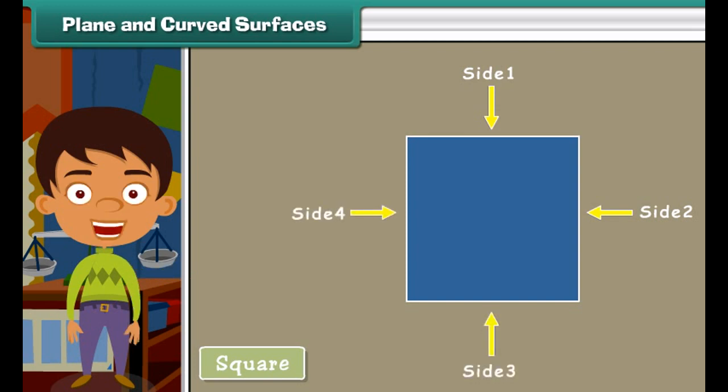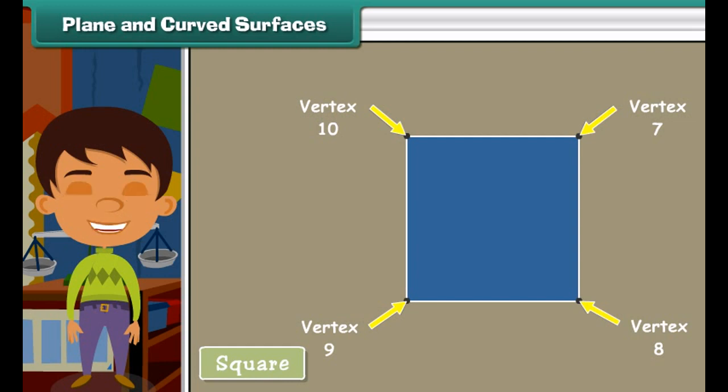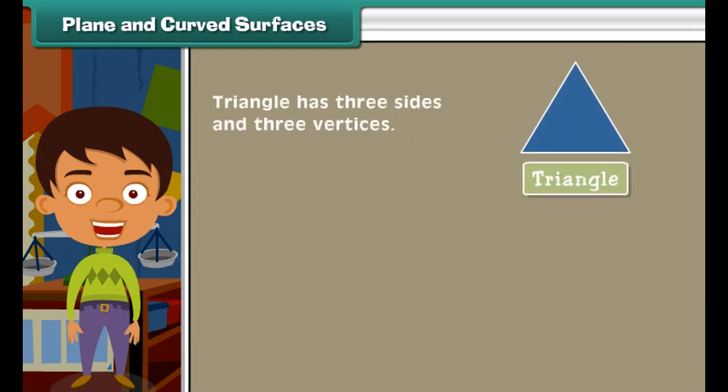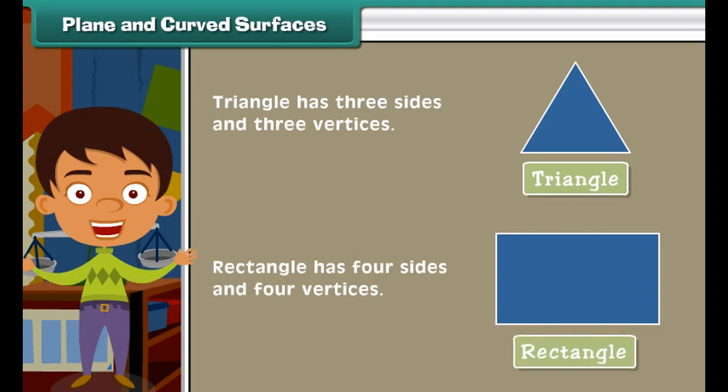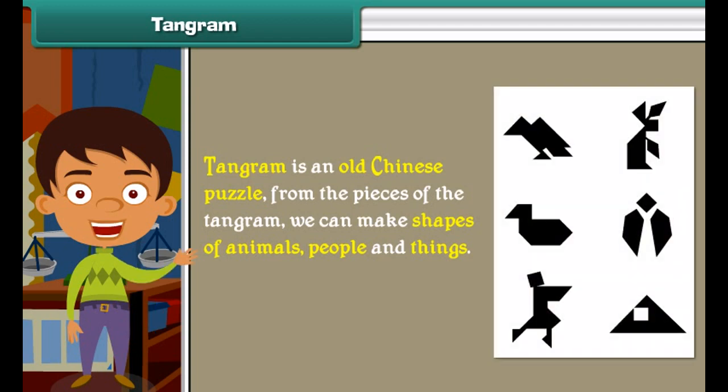Now we'll study about plane figure sides and vertices. Look at this square. Arrows one, two, three, four indicate the sides of a square. A square has four sides. The point at which two sides meet is called a vertex. Arrows six, seven, eight, nine indicate the vertices of a square. So here we see a square has four vertices. Similarly, triangle has three sides and three vertices. Rectangle has four sides and four vertices.